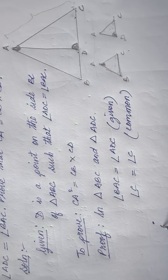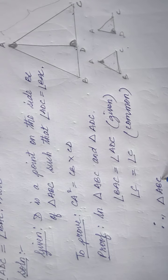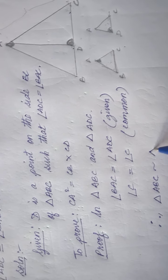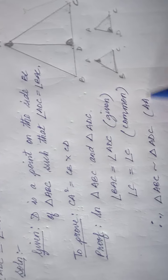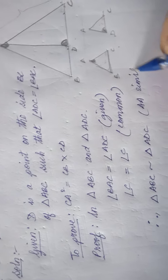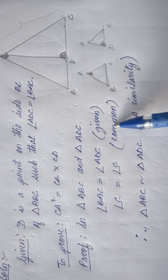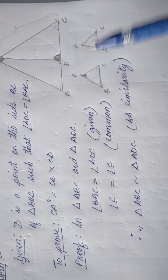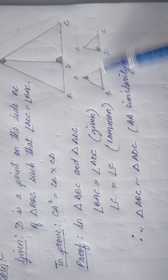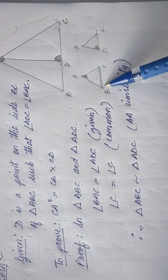Therefore, triangle ABC is similar to triangle ADC by AA similarity. If we have two angles equal in two triangles, we can state that those two triangles are similar.